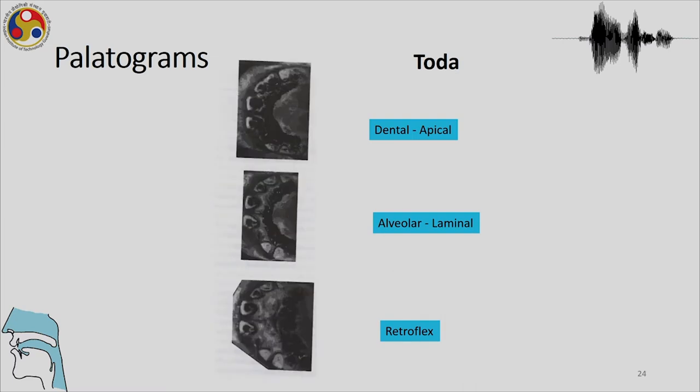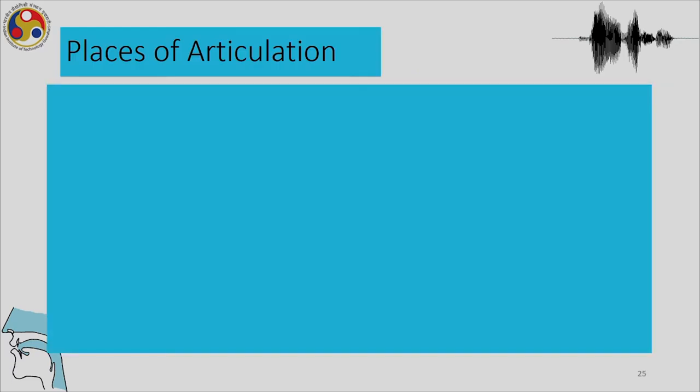In the Toda case, the tip and blade of the tongue contact the upper front teeth and alveolar ridge, showing that these are laminal denti-alveolar stops. The contacts made are different for all three places: one is denti-alveolar apical, another is alveolar laminal involving the blade of the tongue, and retroflex sounds — as we will see — are sub-apical, neither apical nor laminal.